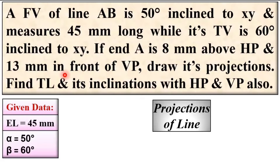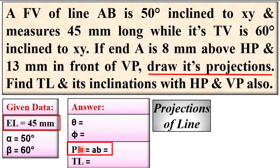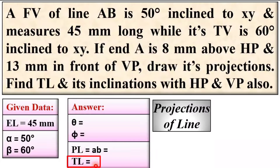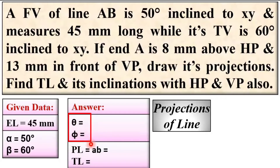Point A is 8 mm above HP and 13 mm in front of VP, and we need to find the plan length and elevation length — these are called the projections. We also need to find the true length, so TL equals question mark, and its inclination with HP and VP, which means theta and phi. These are both the true inclinations of line AB with HP and VP.